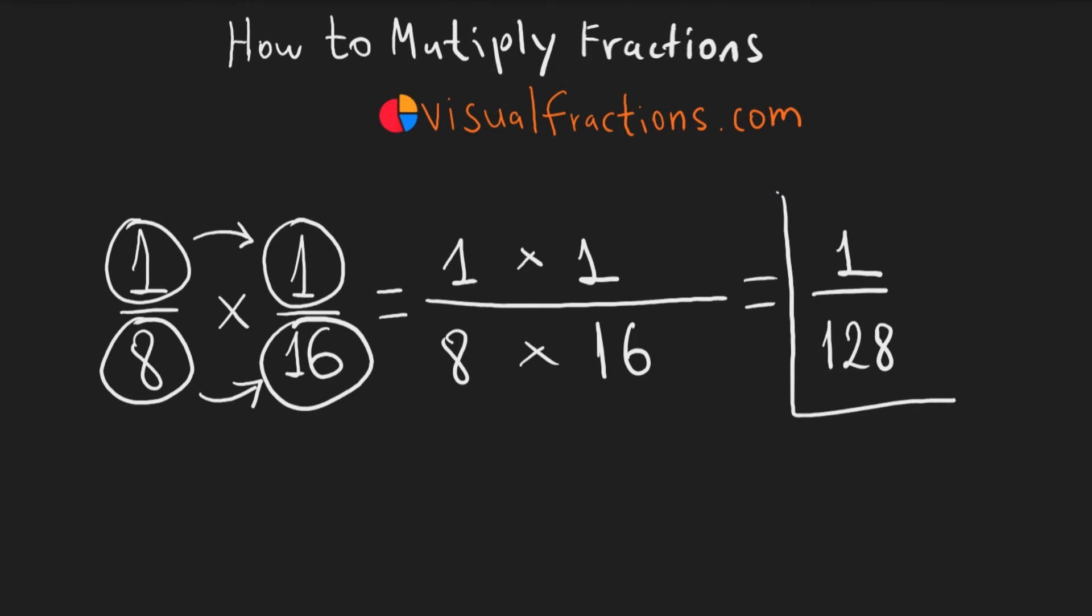So, 1/8 multiplied by 1/16 equals 1/128. That's our final answer. It's important to note that 1/128 is already in its simplest form.